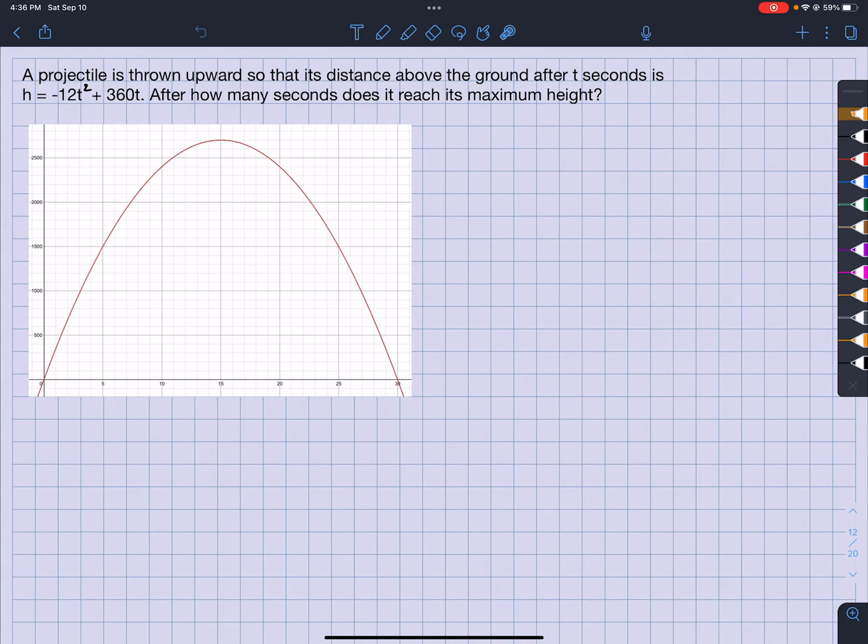What's up, what's up? It's your man, Jimmy Chan. A projectile is thrown upward so that its distance above the ground after t seconds is h equals negative 12 t squared plus 360 t. After how many seconds does it reach the maximum height?